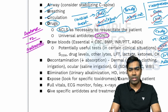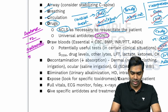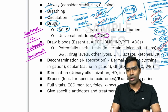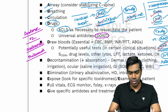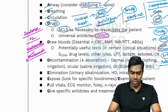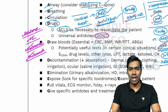N stands for naloxone, which you can consider in the setting of opioid intoxication. T stands for thiamine, which you can consider in suspected Wernicke's encephalopathy — especially if your patient is alcoholic presenting with altered mental status. So DONT stands for Dextrose, Oxygen, Naloxone, and Thiamine — these are the universal antidotes.